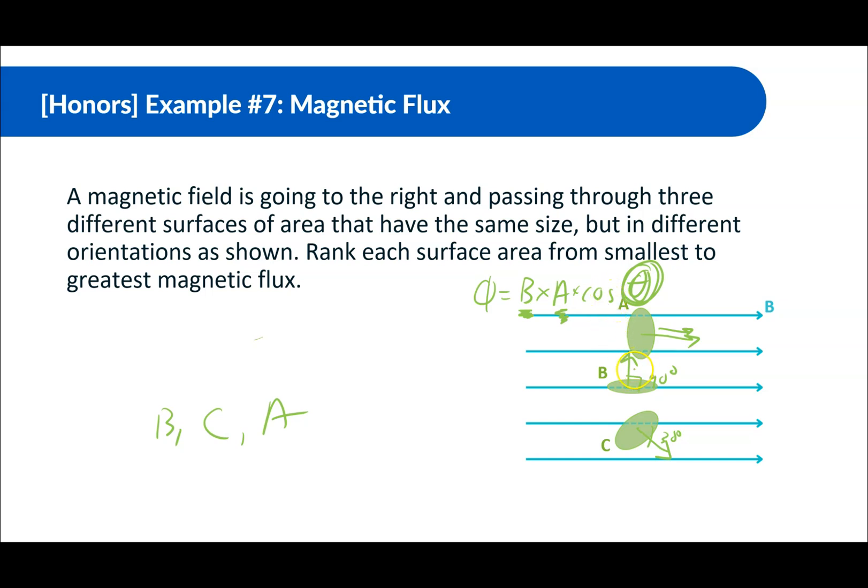While cosine of 90 is going to be 0, making the whole magnetic flux 0, while cosine of 30 or 45 is not as much as 1. So it's going to be B, C, and A. All right, moving on.